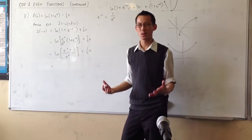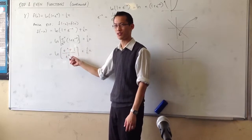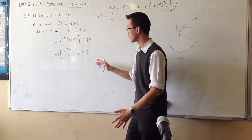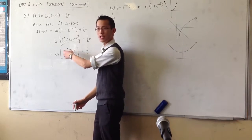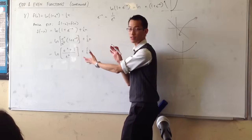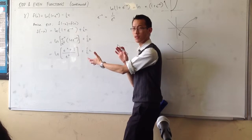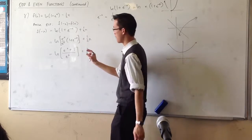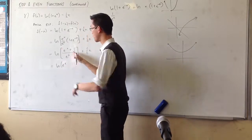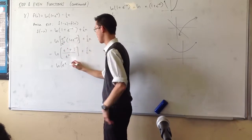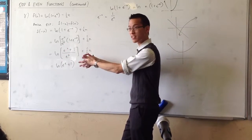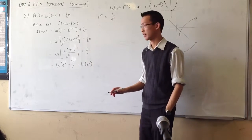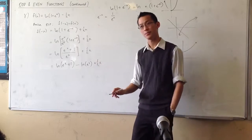To get rid of the fraction inside the log, you need to remember your log laws. When you've got division inside the log, you can convert that to subtraction on the outside — and the flip is also true: multiplication on the inside becomes addition on the outside. So I split it: log of the numerator minus log of the denominator, and then I have my half x floating over here.